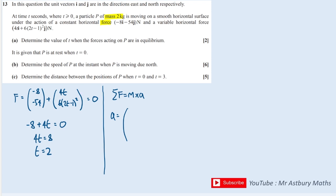So the acceleration is the sum of the forces divided by the mass. Writing this out, I get 4T minus 8 divided by 2, which is 2T minus 4. And over here, I have 6 times 2T minus 1 all squared divided by 2, so it's 3 lots of 2T minus 1 all squared, and minus 54 divided by 2, so minus 27.